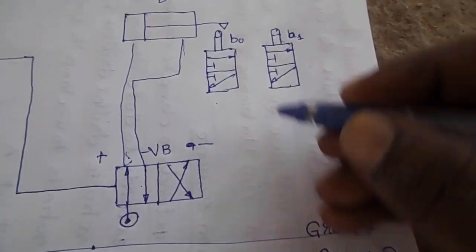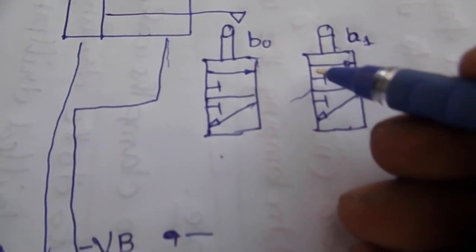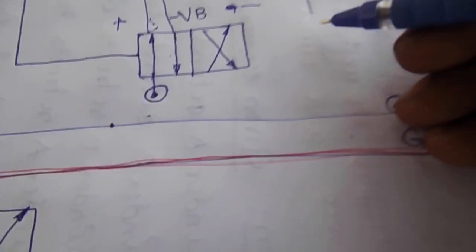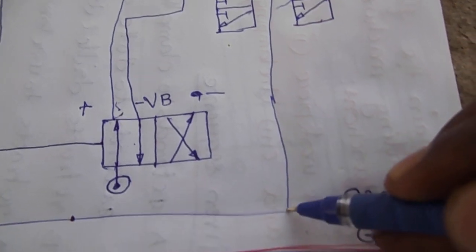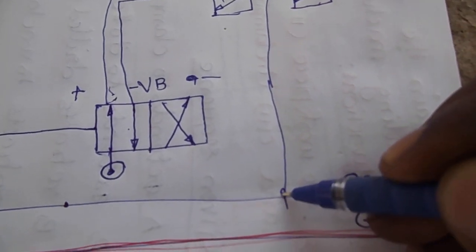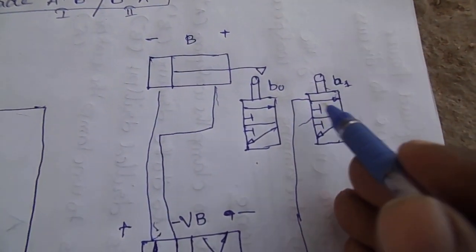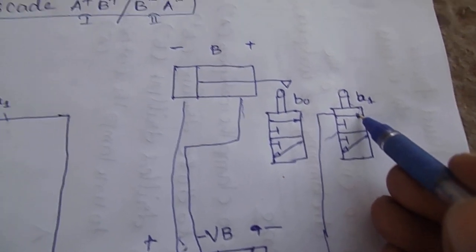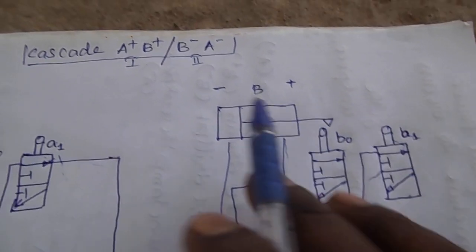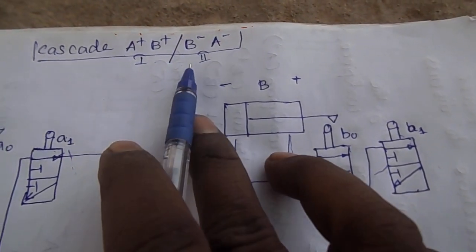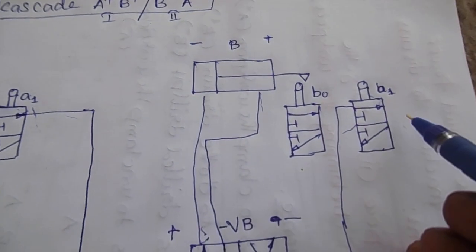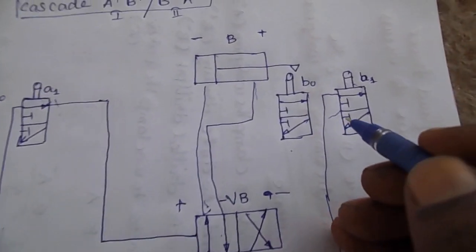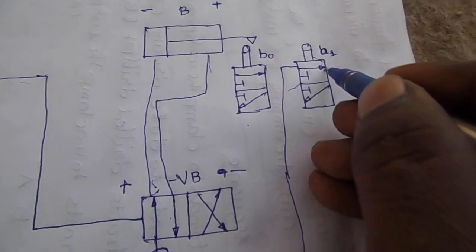If you need to connect it to your group, then you connect it to your group. So let's connect to your group. Let's start the limit valve — if you have B plus, then we move to the group. There is a group change at B minus.